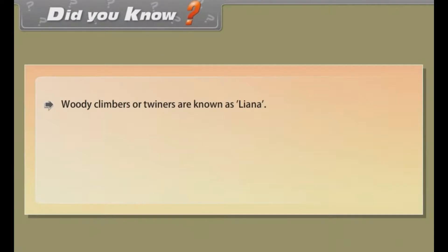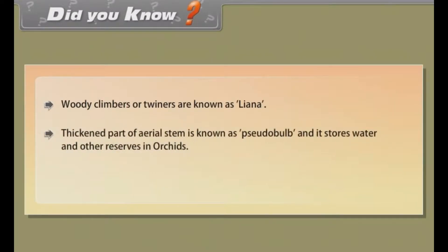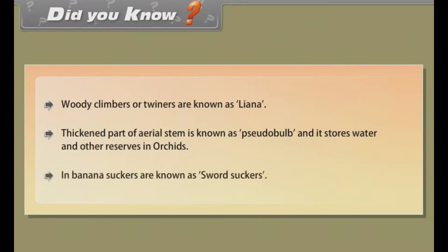Did you know? Woody climbers or twiners are known as lianas. The thickened part of an aerial stem is known as a pseudobulb, and it stores water and other reserves in orchids. In banana, suckers are known as sword suckers.